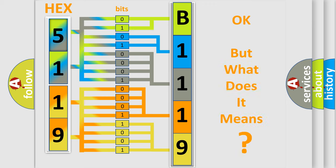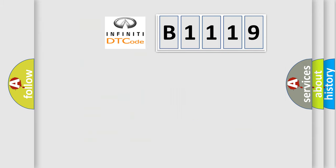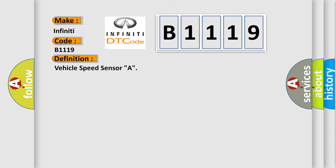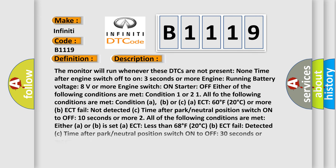We now know how the diagnostic tool translates received information into a more comprehensible format. The number itself does not make sense to us if we cannot assign information about what it actually expresses. So, what does the diagnostic trouble code B1119 interpret specifically for Infiniti car manufacturers? The basic definition is: Vehicle Speed Sensor A. Here is a short description of this DTC code.